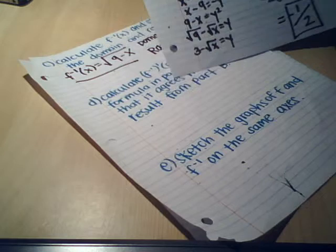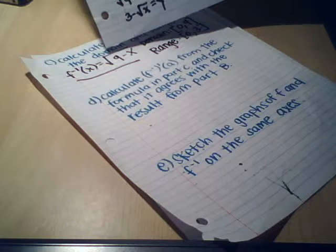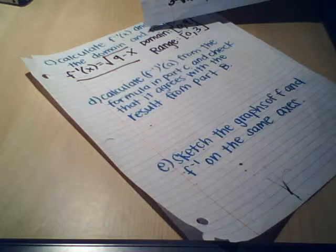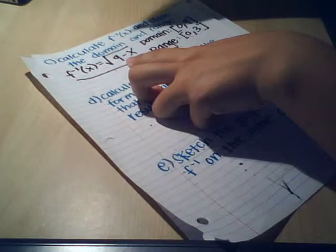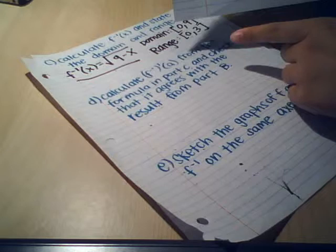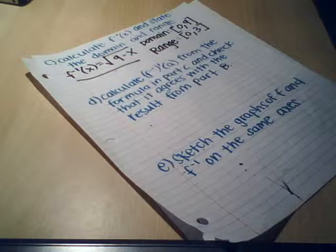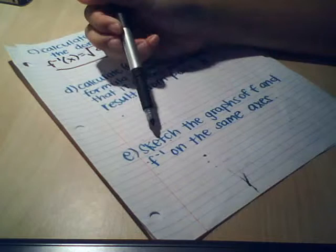Looking back at part B right here, we see that 3 minus root x is the same thing as the square root of 9 minus x. Therefore, if we were to calculate the derivative of the inverse A with the square root of 9 minus x, it will be the same thing as calculating the derivative with 3 minus root x. Therefore, both the answers agree with each other. The derivative agrees.